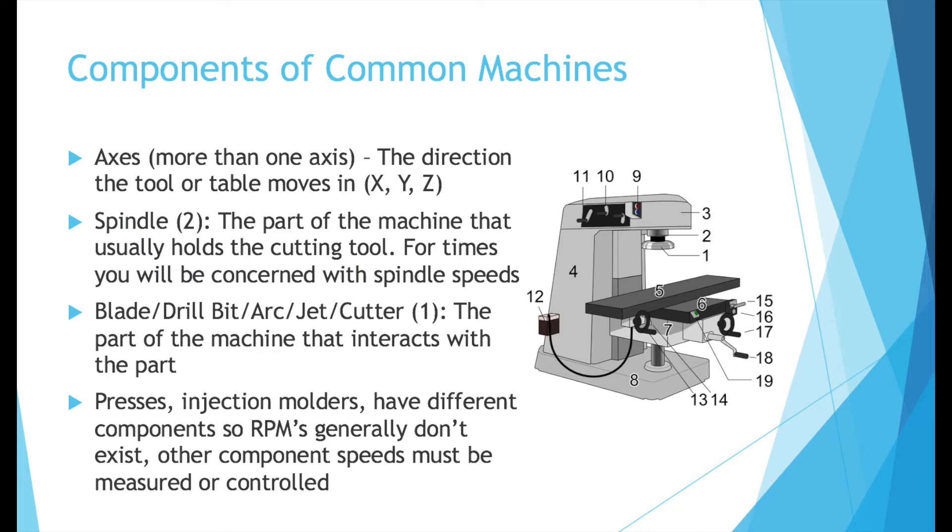It's important to note as well that presses, injection molders, they'll have different components. So the RPMs generally don't exist. On a press or injection motor, you don't have something rotating usually, so the revolutions per minute won't matter. But these other machines will have different speeds and things to measure that will matter for production.